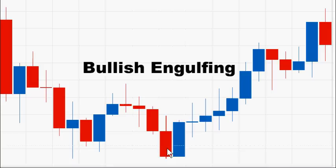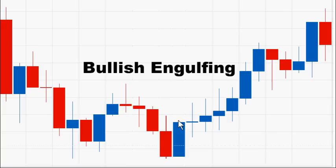The bullish engulfing pattern consists of two candles and is located at the bottom of a downtrend. The first candle is a bearish red candle. The second candle is a bullish blue candle that closes higher than the body of the previous red candle — in other words, the red candle body is completely engulfed by the body of the following blue candle. Shadows are normally not a consideration, but ideally the blue candle will close at or very near its high price with very little or no shadow.